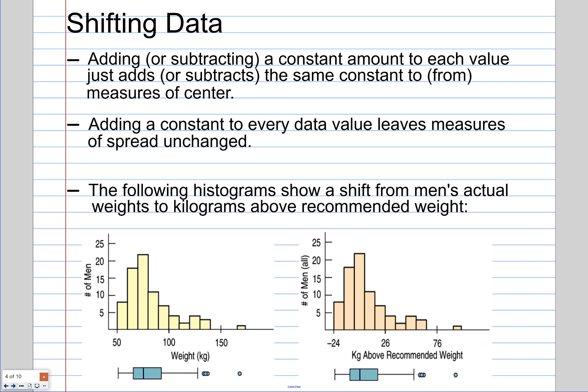The whole premise of this comes from the idea that if you take all of your data values and add or subtract a constant to them, stuff is going to change. This slide about shifting data says that if you add or subtract a number to all of your data values, your measures of center will change. Does anybody remember measures of center? The mean and the median. That's exactly right. The mean and the median will change as well. But measures of spread will be unchanged.